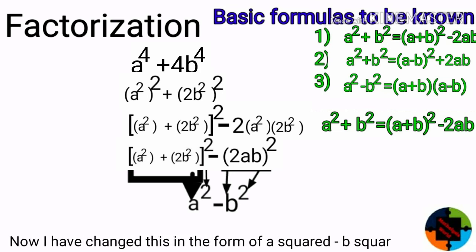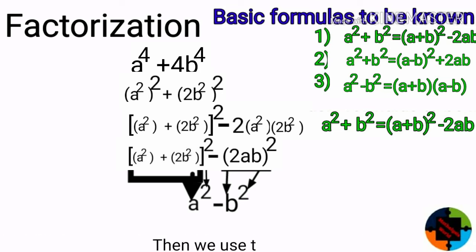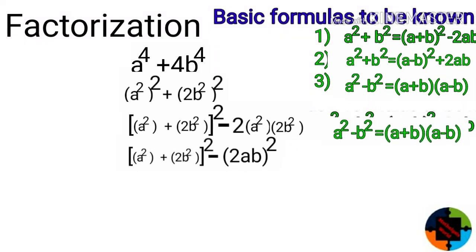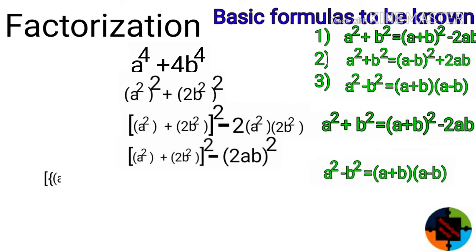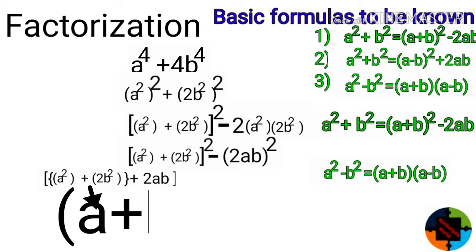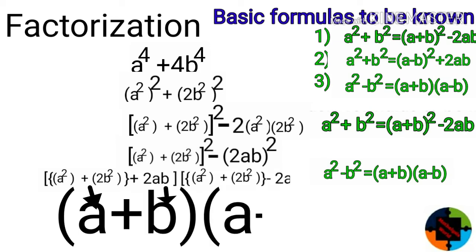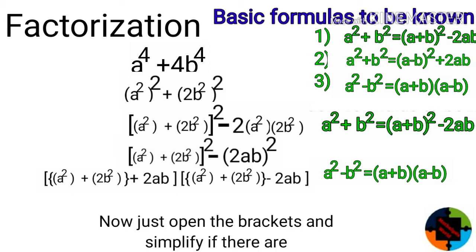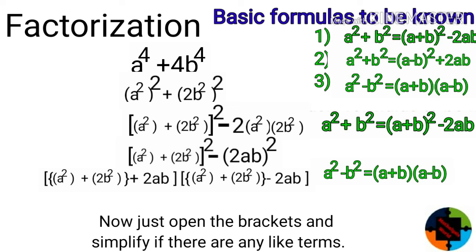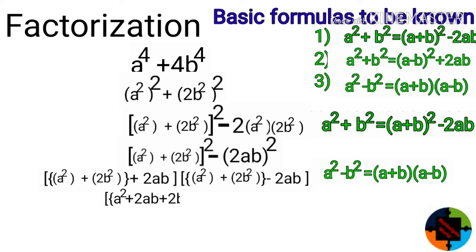Now we have changed this into the form of a squared minus b squared, so we use formula number three: a squared minus b squared equals a plus b times a minus b. This gives us a squared plus 2b squared plus 2ab, times a squared plus 2b squared minus 2ab. Opening the brackets and simplifying — there are no like terms — we write it as a squared plus 2ab plus 2b squared, times a squared minus 2ab plus 2b squared.